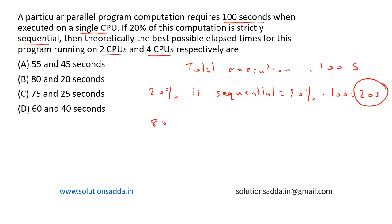Now the rest of the program, that is 80%, is run on 2 CPUs as well as 4 CPUs. So 80% of 100 seconds is 80 seconds.